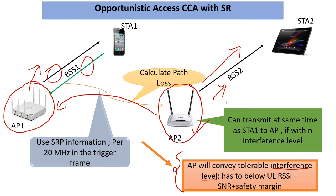The AP opening up the ground for potential spatial reuse also tells clearly in the trigger frame what interference levels are allowed. The reuse stations — it could be AP2 to STA2 or STA2 to AP2 — should calculate the path loss between the AP which is opening up and itself from the received signal, then calculate what transmission power to use so that it is below the tolerable interference levels. It is very opportunistic — somebody offers for a limited time with certain constraints, and if you are capable of using it and receiving under these conditions, you can go ahead. There are no power measurements, and any back off you have started you can complete before transmitting.